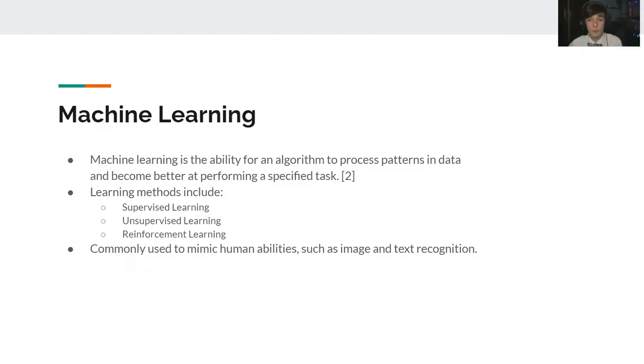Machine learning is the ability for an algorithm to process patterns in data and improve through data input. The algorithms make alterations within their hidden workings to effectively learn from the data being inputted and become better at performing a specified task. Our algorithm uses supervised learning, which first uses labeled training data and becomes more accurate the more data it consumes. Various forms of machine learning can be found in technologies meant to mimic human abilities, such as text recognition or image recognition, which we use to analyze the scans.